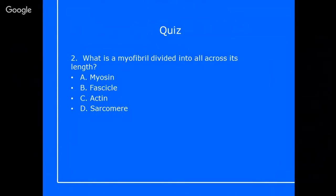Let's have a little quiz on this one. What is a myofibril divided into across all of its length? Is it myosin, fascicle, actin, or sarcomere? Take a second just to work that one out and then pop your answer in the comments box below. If you got it wrong, it really doesn't matter—it's about learning curve. If you get it wrong, please don't worry. The answer is D: sarcomere.